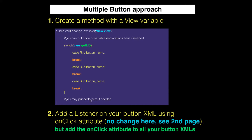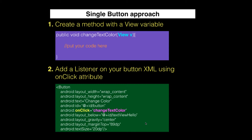Next, add a listener on your button XML using the onClick attribute — same as the single button approach, but add the onClick attribute to all your button XMLs. Do not forget to add the onClick listener in XML to all your button XML code. You put on every button the onClick attribute with the name of the method that shall be called. So let's dive into the actual code.